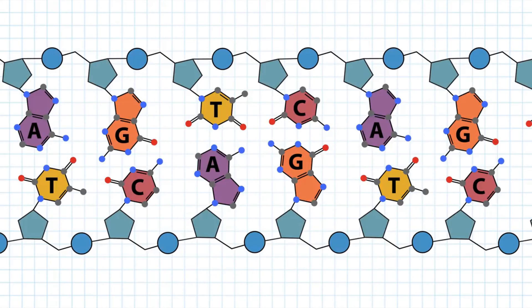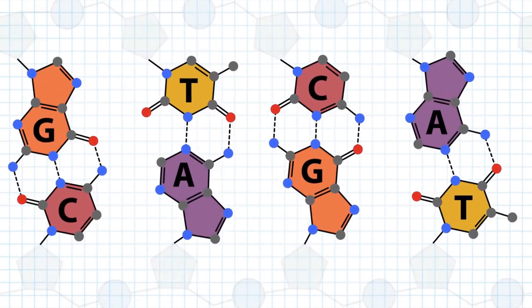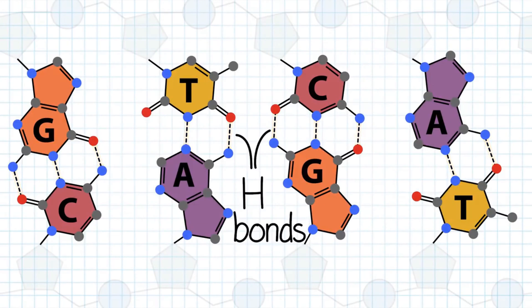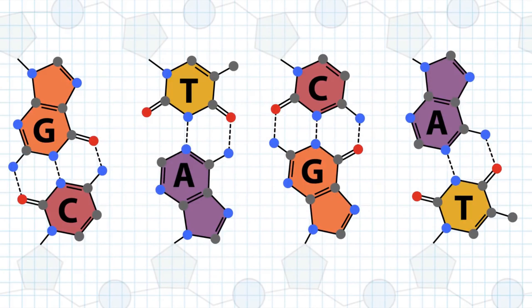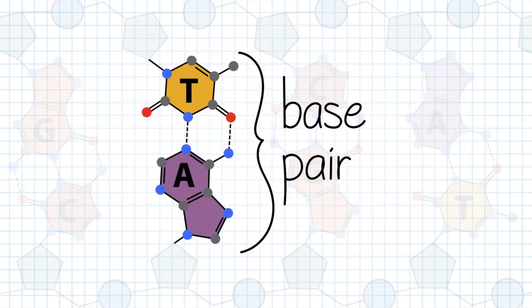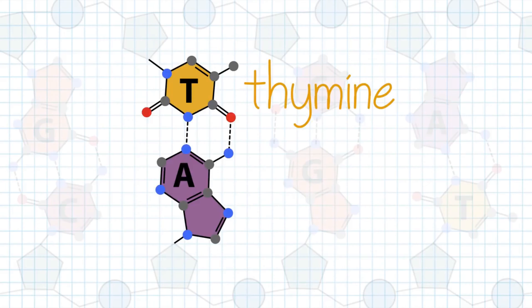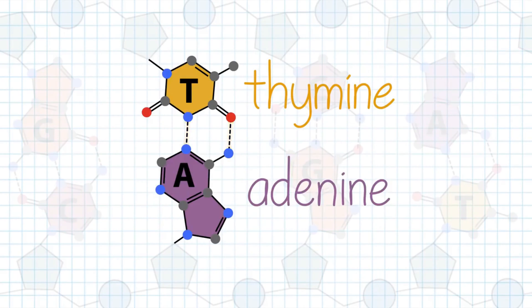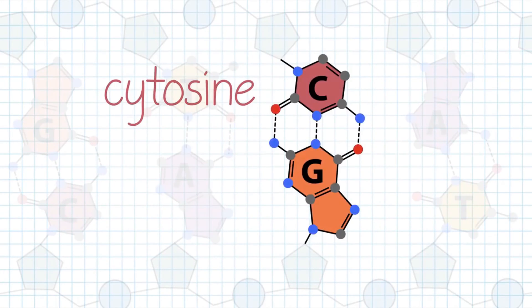Although the nucleotides come together through covalent bonds in the backbone, the two DNA strands interact through non-covalent hydrogen bonds between the bases. Each base forms multiple hydrogen bonds with its complementary base on the opposite strand. Bound together by hydrogen bonds, each unit is called a base pair. The hydrogen bonding contributes to the specificity of base pairing: thymine preferentially pairs with adenine through two hydrogen bonds, and cytosine preferentially pairs with guanine through three hydrogen bonds.